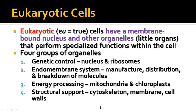Eukaryotic cells — eu means true — have a membrane-bound nucleus and other organelles that do special jobs within the cell. There are four main groups of organelles: the nucleus and ribosomes involved with genetic control; the endomembrane system involved with the manufacture, distribution, and breakdown of molecules; organelles involved with energy processing, including mitochondria and chloroplasts; and structures for support of the cell, including the cytoskeleton and membrane and cell walls.